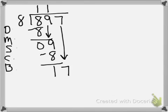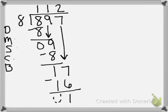So I can bring down my last 7. 8 times what gets me close to 17 but not go over? Will be 2. 8 times 2 is 16. 17 — subtract. And I end up with 1. Some people are drawing these little invisible zeros, which are kind of fun. So I end up with a remainder of 1.